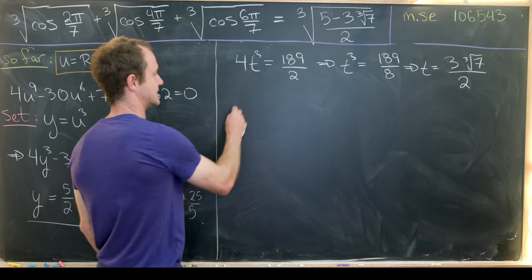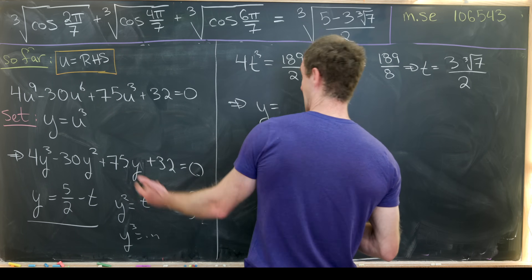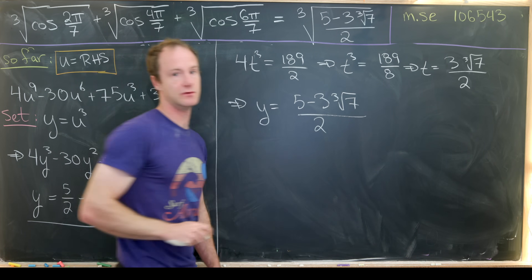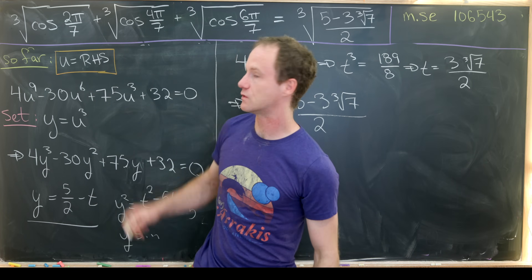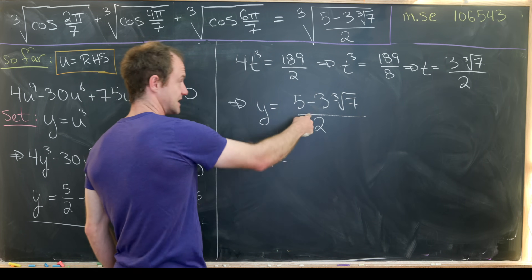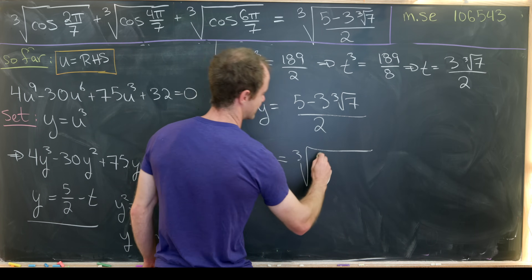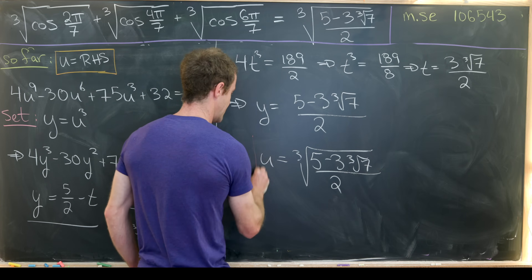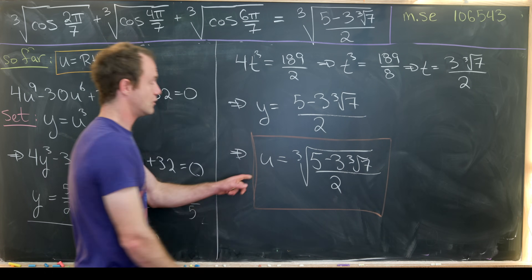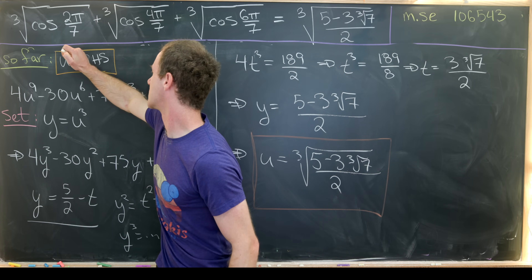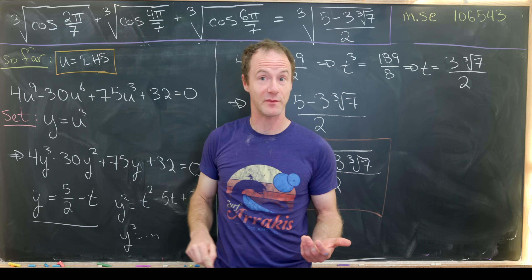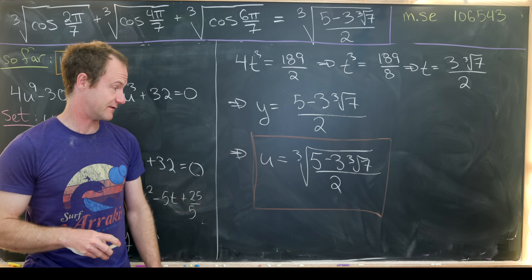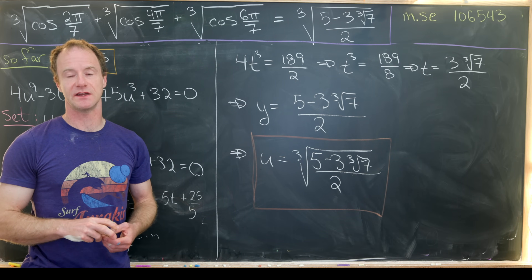Since y = u³, we have u³ = (5 − 3·∛7) / 2, so u = ∛((5 − 3·∛7) / 2). But u = α + β + γ, which is exactly the left-hand side of our identity. Thus we've shown that the left-hand side equals the right-hand side, completing the derivation of Ramanujan's identity. And that's a good place to stop.